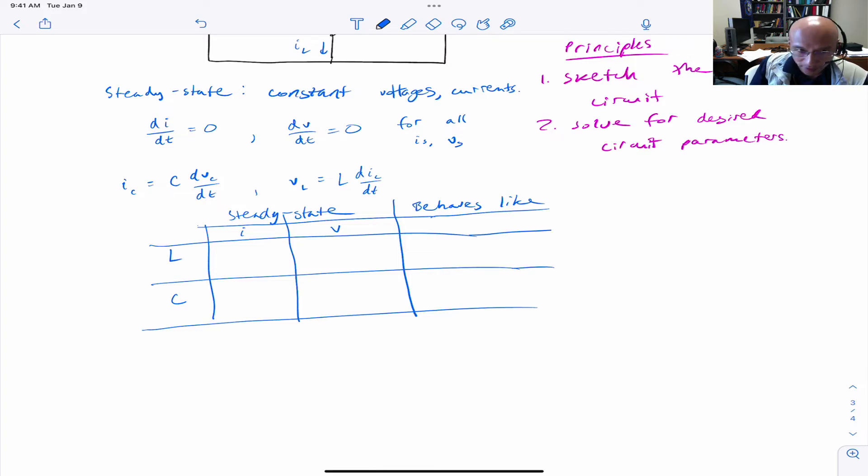So for an inductor, we have that the voltage has to be zero. The current, we don't know. And for a capacitor, the current has to be zero. The voltage, we don't know. So the inductor behaves like a short circuit, and the capacitor behaves like an open circuit.